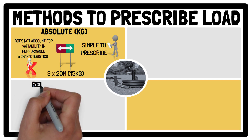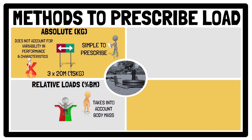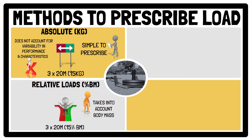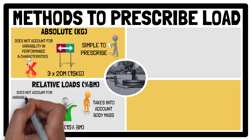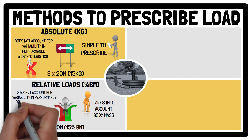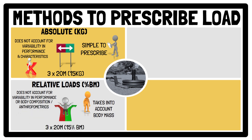While using relative loads does take into consideration the athlete's body mass — for example, completing 3x20m using a sled load of 15% of body mass — it still does not take into consideration the variability in the athlete's velocity and force production, or their body composition and anthropometrics. Therefore, like absolute loads, the same relative load used by two athletes of similar body mass may lead to different adaptations and result in different reductions in sprint velocity.